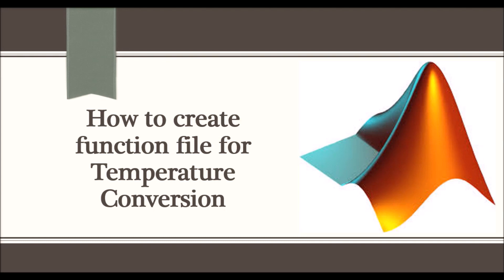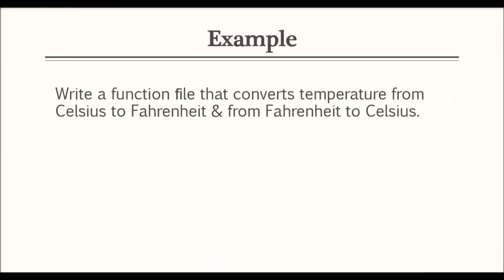In the last video, I shared an example where we created a function file that took one input and returned three outputs. Today I am going to share with you the example of writing a function file that converts temperature from Celsius to Fahrenheit and from Fahrenheit to Celsius. You have two options: you can create two separate function files.